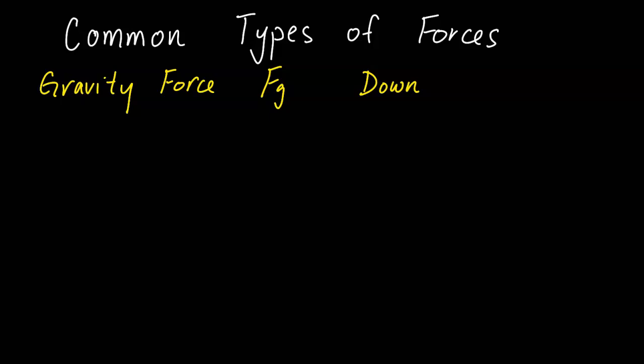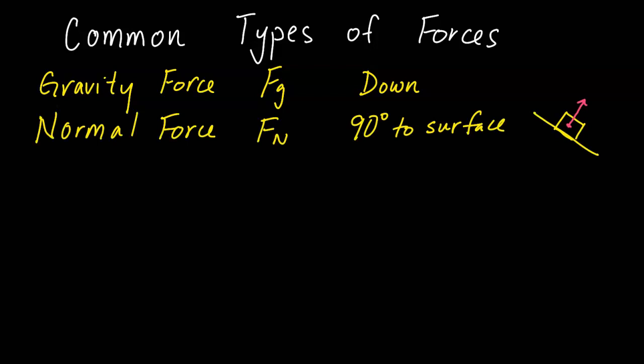The next force is normal force, symbol Fn. This is a force applied by the surface and its direction will be 90 degrees perpendicular to the surface. For example, if you have a box on an incline the normal force is not always straight up — it will be at an angle, but always 90 degrees to the surface. The normal force is also known as the support force.